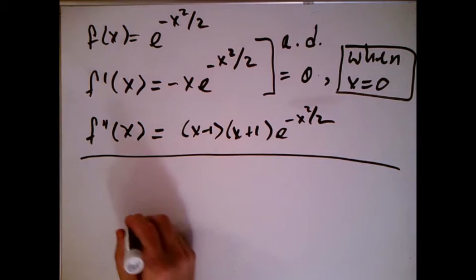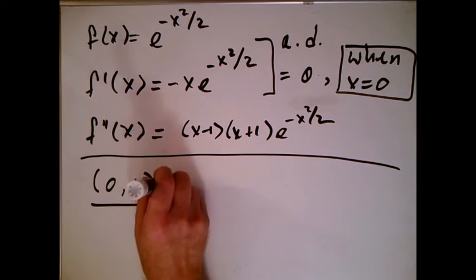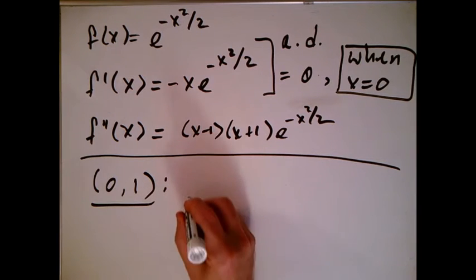All right, so I'm going to come down here. The critical point is going to be (0,1). And what am I supposed to do? By the second derivative test...